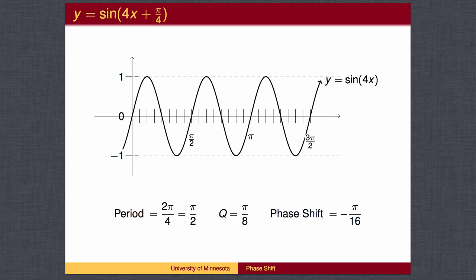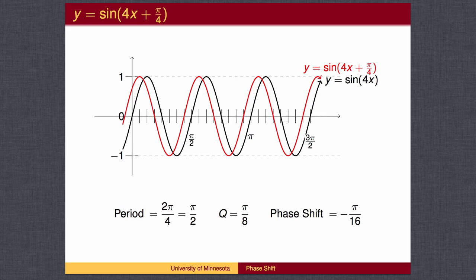Restating the key points using denominator 16: the wave hits the high point at 2 pi over 16, back to the middle at 4 pi over 16, down to the bottom at 6 pi over 16, and back to the middle at 8 pi over 16. We now shift the wave pi over 16 to the left: the start moves to negative pi over 16, top at pi over 16, middle at 3 pi over 16, bottom at 5 pi over 16, and middle at 7 pi over 16. We can extend the wave further if we wish.